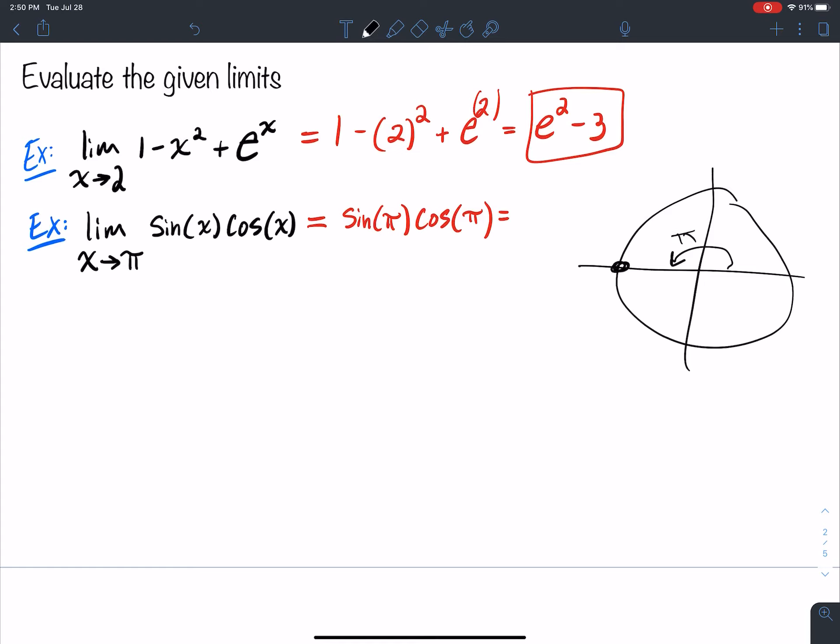So what's that going to be? That is going to be negative 1 comma 0. So sine is 0, and cosine is negative 1. So since that's the case, when I multiply those two things together, I get 0.